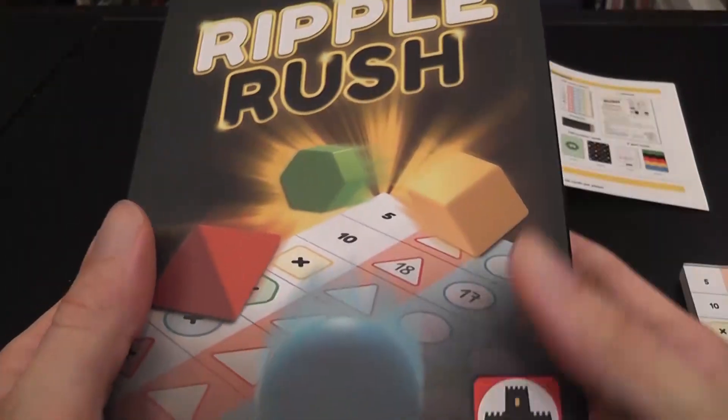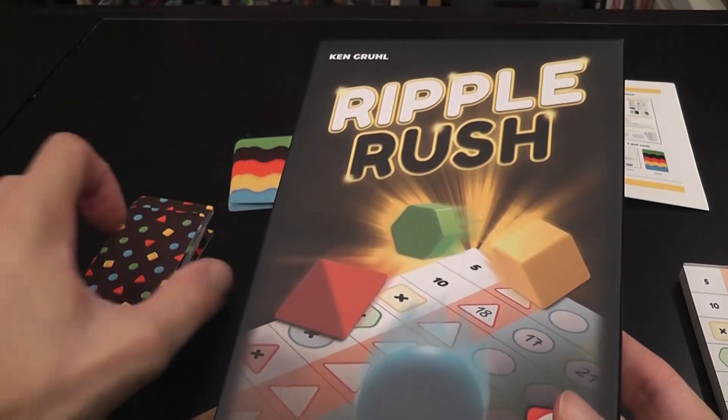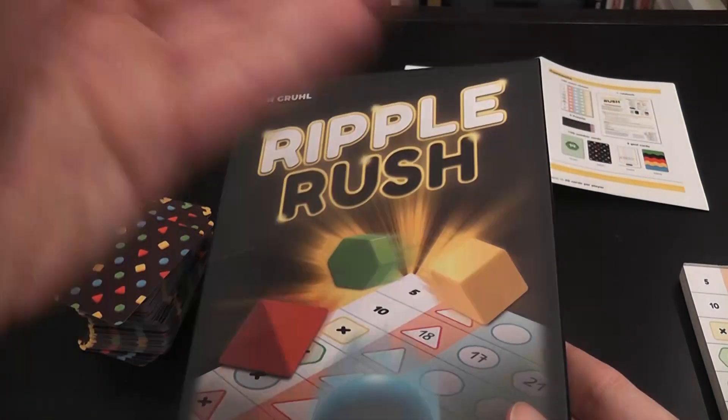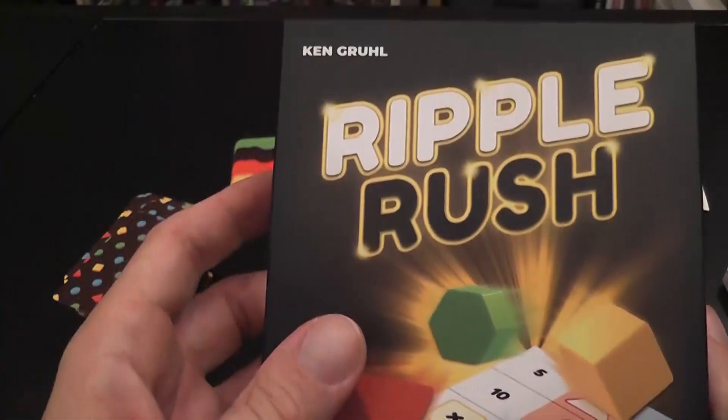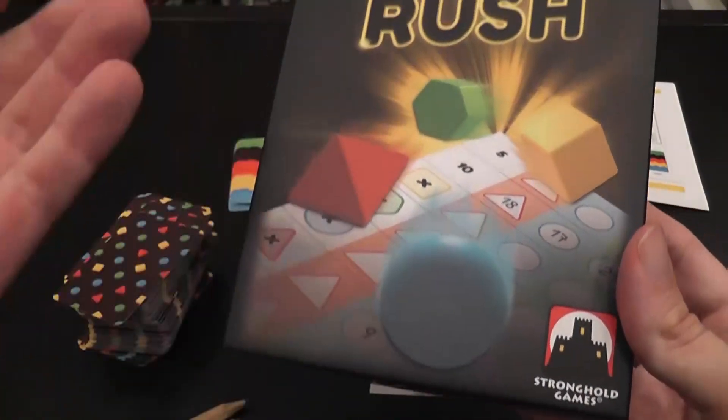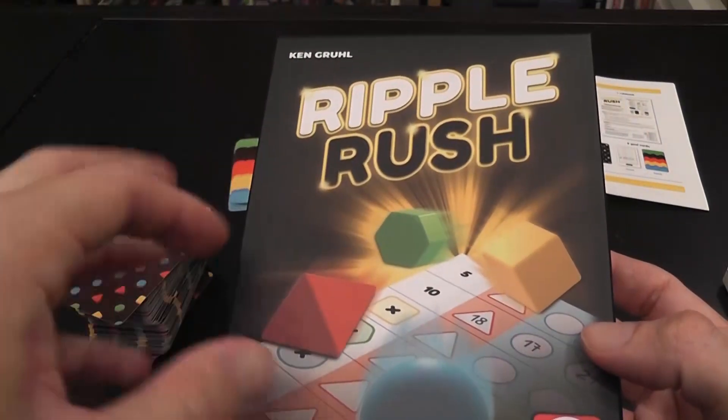Ripple Rush. This is a simple draw and draw game, a variant of the roll and draw, where you draw cards, receive a prompt, and then you draw on a sheet of paper, and you score things at the end. Stronghold Games has been publishing a number of them, and this is a game in that family.